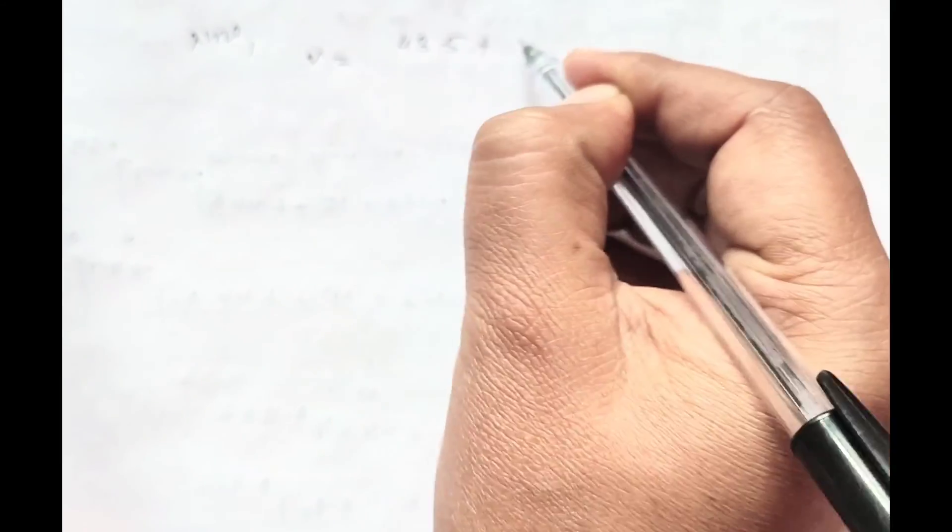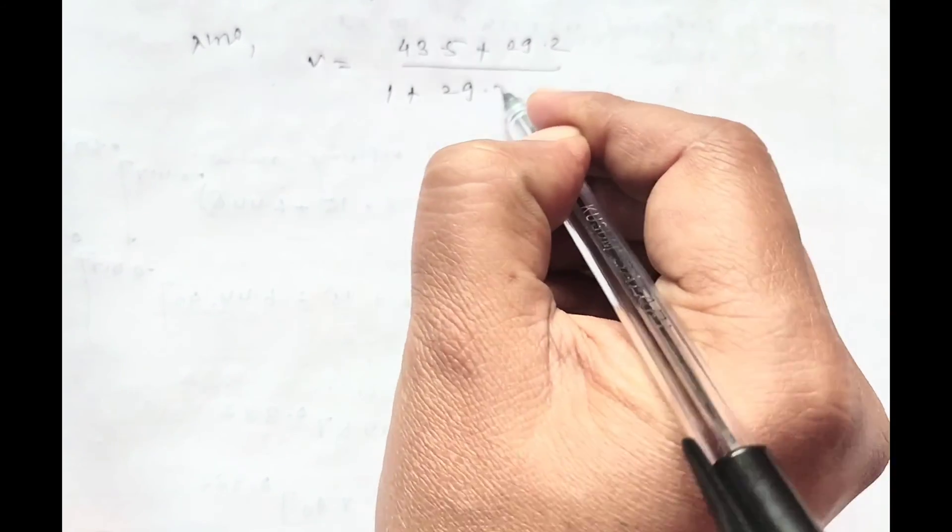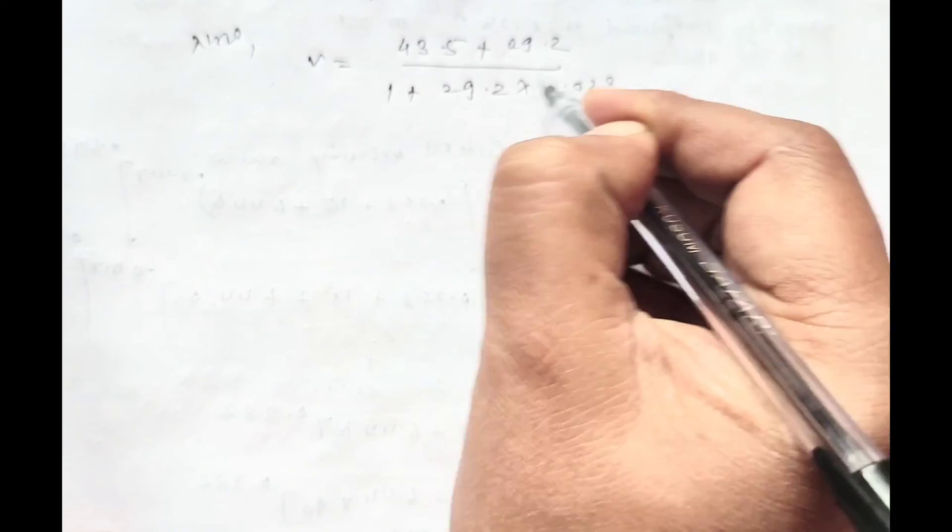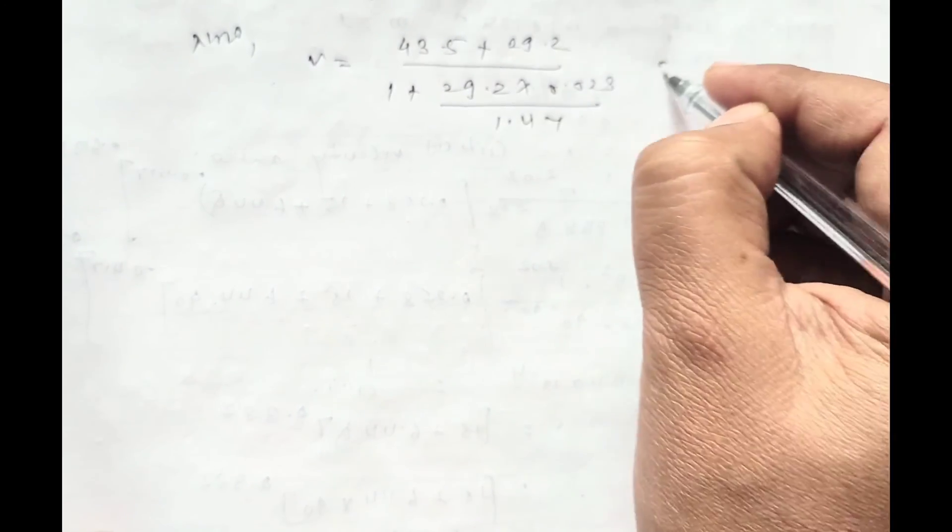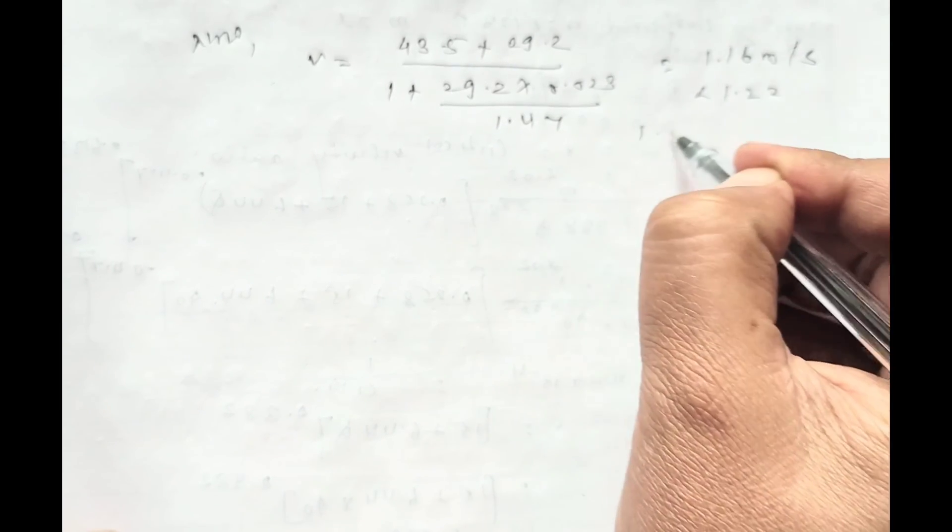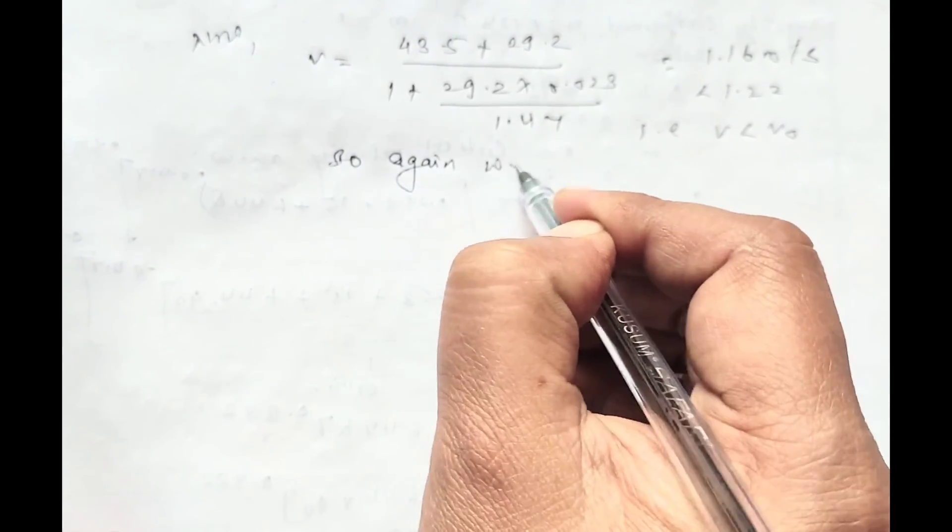On solving, the velocity will be 1.16 meter per second, which is less than 1.22. That is, V is less than V₀, so we have to reduce depth.